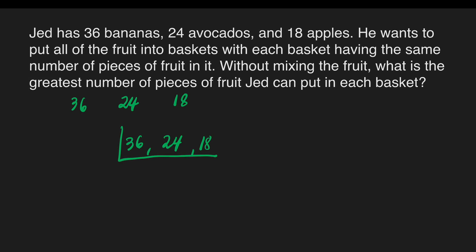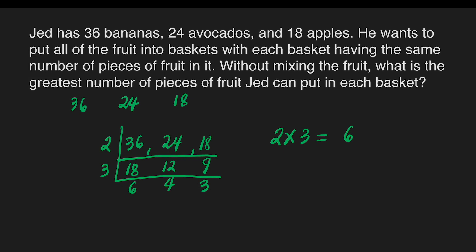What prime number can we divide all three numbers? We can start with 2. 36 divided by 2 is equal to 18, and 24 divided by 2 is equal to 12. Do we still have a number that can divide 18, 12, and 9? Yes, we have 3. 18 divided by 3 is 6, 12 divided by 3 is 4, and 9 divided by 3 is 3. Since there is no prime number that can divide 6, 4, and 3, it means 2 times 3 is equal to 6. And 6 is our answer.